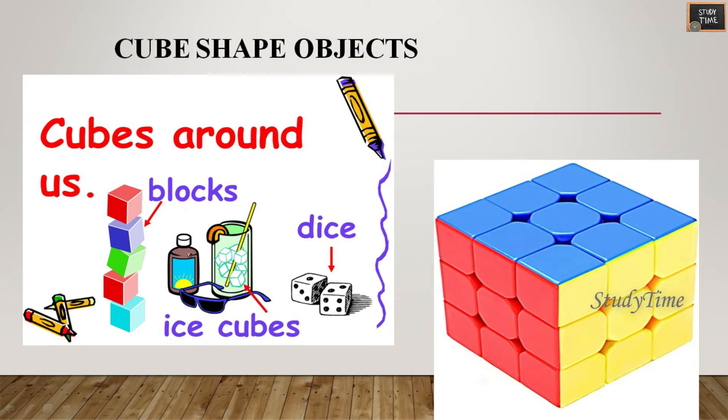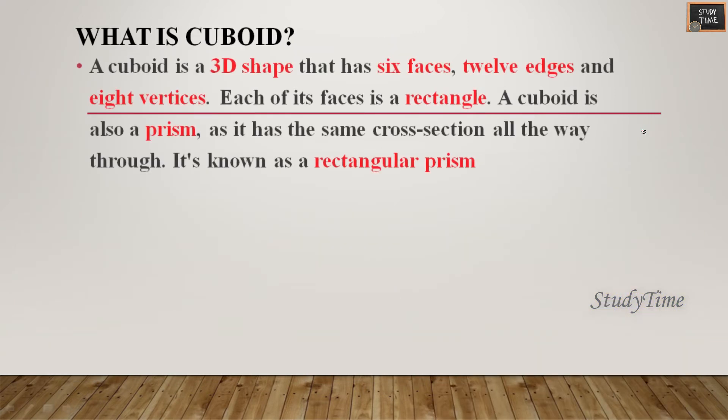Next we'll see cuboid. What is a cuboid? Cuboid is also a 3D shape where each face is like a rectangle.